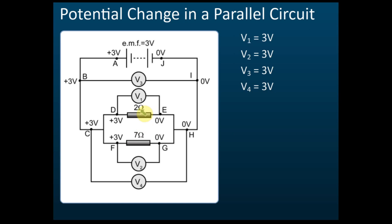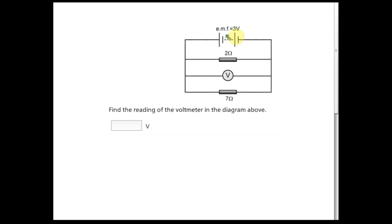So now can you see that for a parallel circuit, the potential difference is always the same for each branch? Here 3 volts, here 3 volts, here to here 3 volts, here to here 3 volts. You connect here to here — also 3 volts. It's always 3 volts.